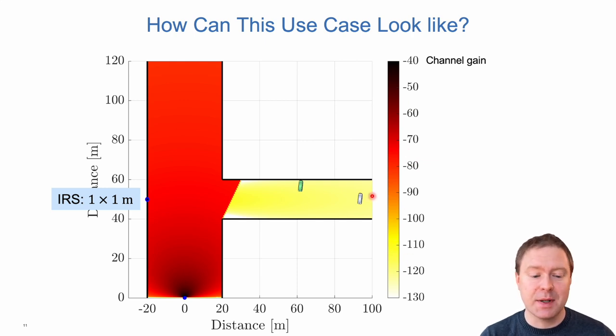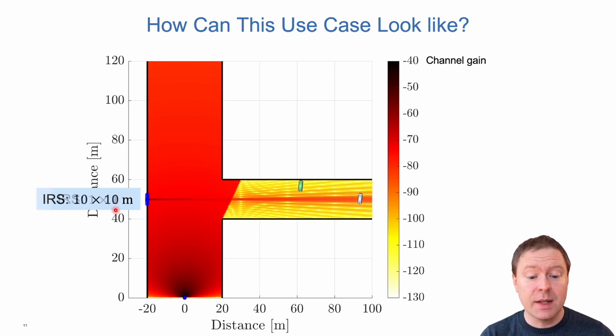Red color here means a channel gain that is relatively good, and yellow means that there is a signal there but it's not particularly strong. If we increase the size of the IRS, we can get this effect instead: a much stronger signal in this neighboring street and now we are up at red colors. We also see that it is very much more narrowly transmitted. This is due to the effect that we have a hundred times larger surface, so it captures a hundred times more signal and it can also beamform the signal much more narrowly because it is larger.